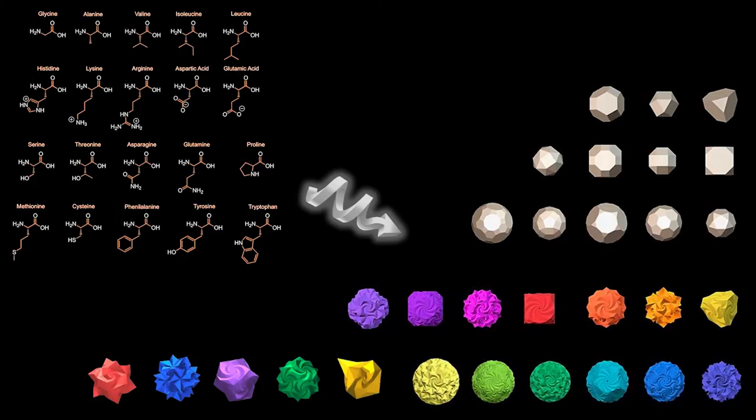We believe this is just the starting point of a new paradigm in material synthesis. It's like DNA, which controls protein structure. In our case, we use the peptide as an encoder to control the morphology of a nanoparticle and even control the chirality of the nanoparticle. We can use peptides to program the morphology of nanoparticles.